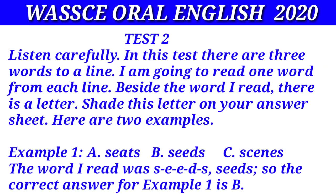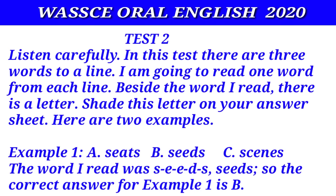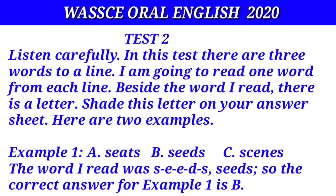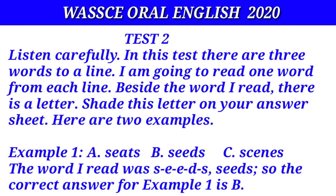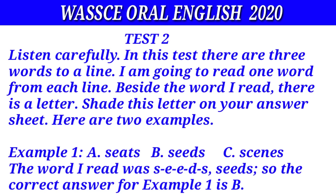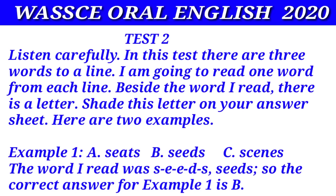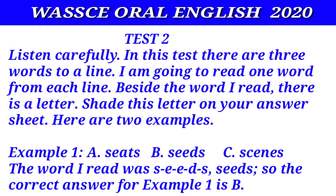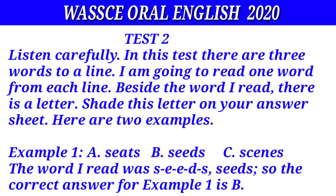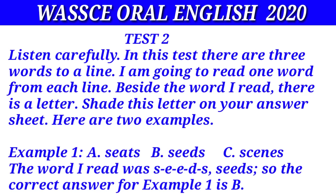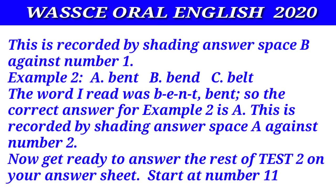Test two. Listen carefully. In this test there are three words to a line. I'm going to read one word from each line. Beside the word I read there is a letter. Shade this letter on your answer sheet. Here are two examples. Example one: seeds. The word I read was S-E-E-D-S, seeds. So the correct answer for example one is B. It's recorded by shading answer space B against number one.